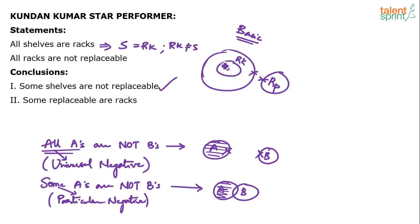Strictly speaking, all shells are not replaceable, but we can also say some shells are not replaceable. Conclusion two: some replaceable are racks — not possible at all. All racks are not replaceable means no replaceable is a rack. So conclusion one follows, conclusion two does not follow. Only conclusion one follows.